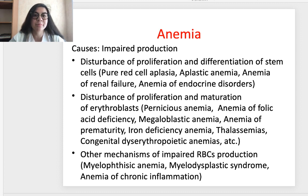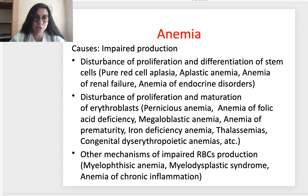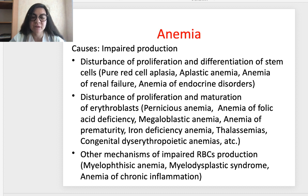Regarding impaired production of red blood cells: disturbance of proliferation and differentiation of stem cells leads to pure red cell aplasia, aplastic anemia, anemia of renal failure due to abnormal erythropoietin production, and anemia of endocrine disorders. Disturbance of maturation leads to megaloblastic anemia, anemia of folic acid deficiency, anemia of prematurity, iron deficiency anemia, thalassemias, and congenital dyserythropoietic anemias.